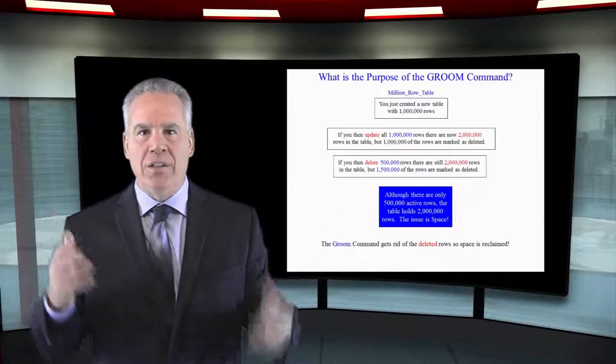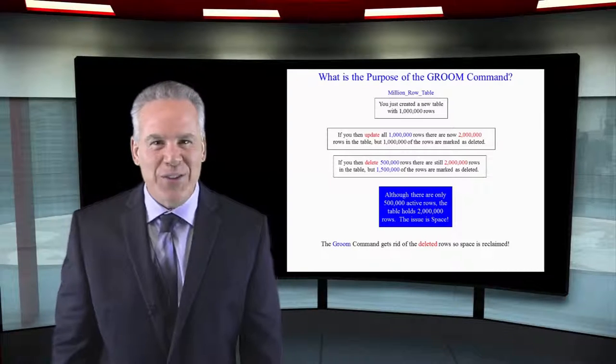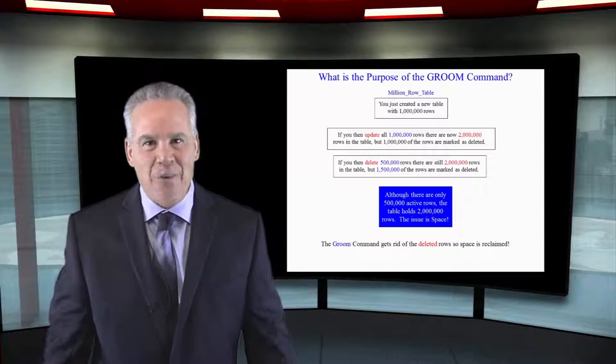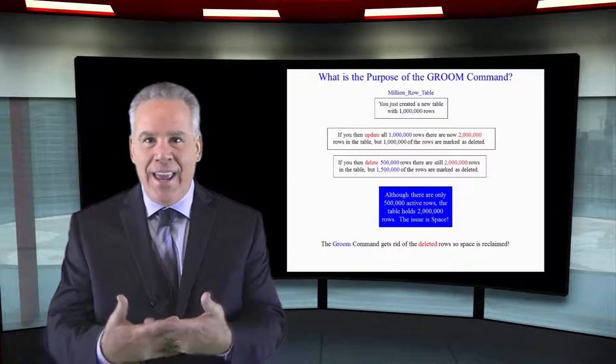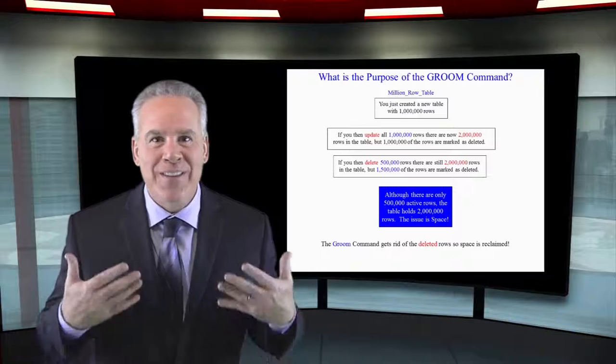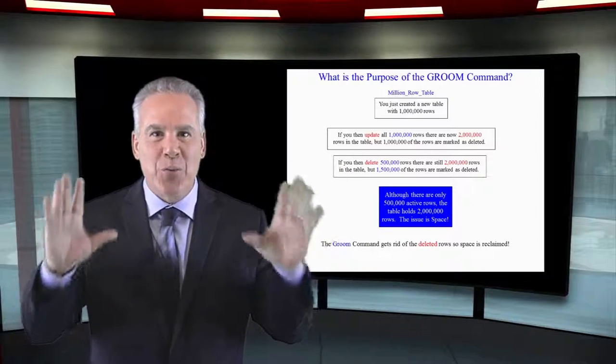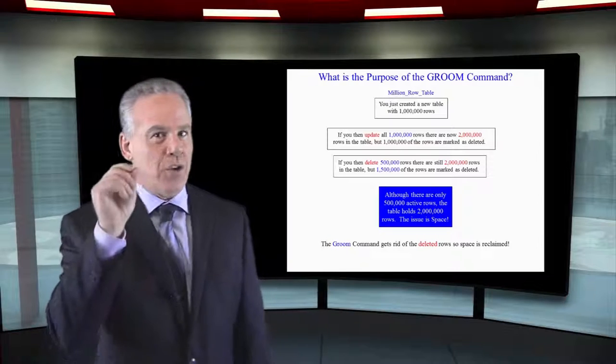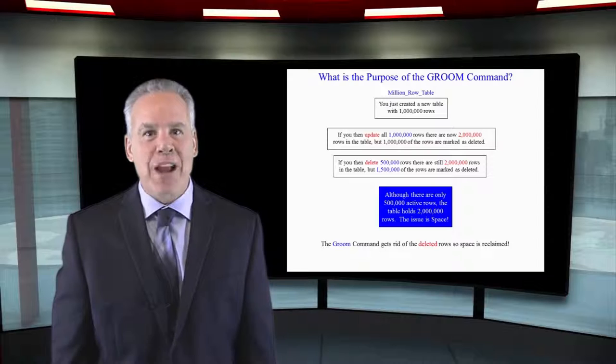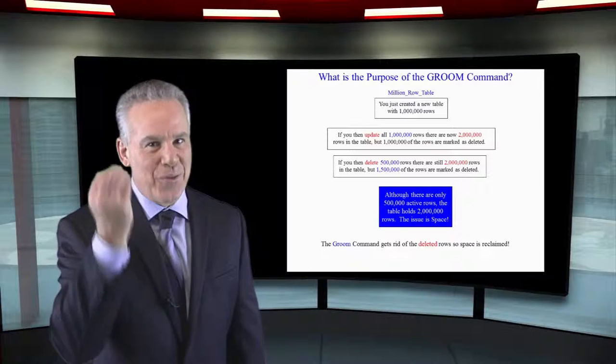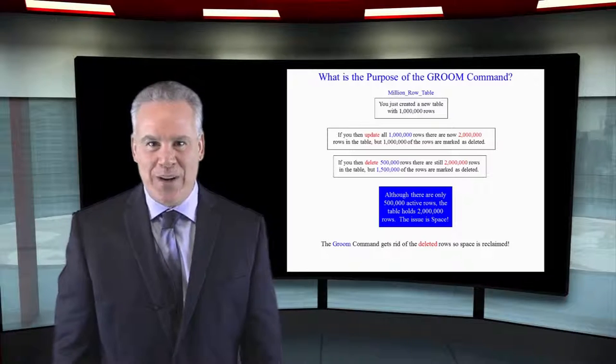Then you deleted half those rows, 500,000 of those active rows. Now what's going on? We got two million rows in the table and there's only 500,000 active rows. We've got so much wasted space but you have finally got the table to where you say this is exactly what I want. These are the 500,000 rows with the updates and I'm all set to query.